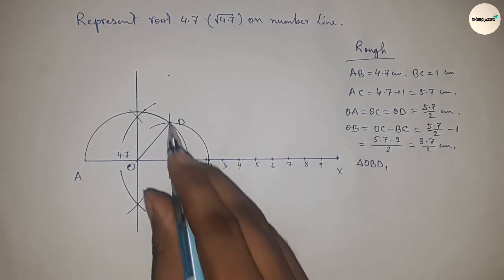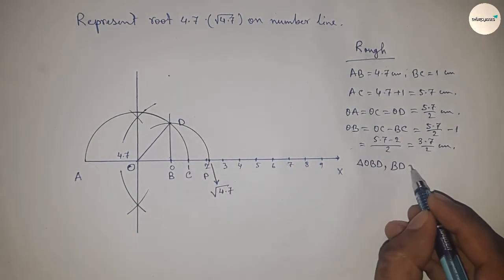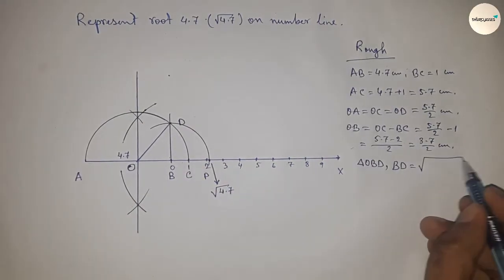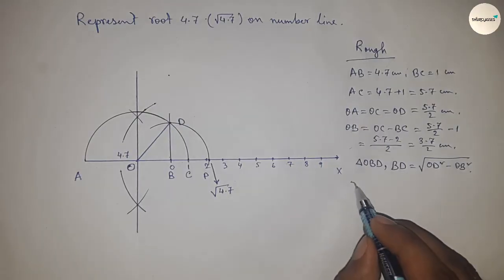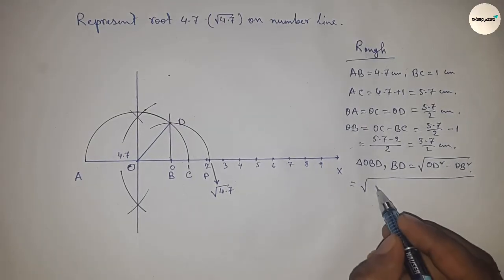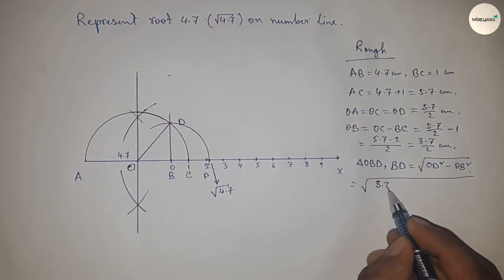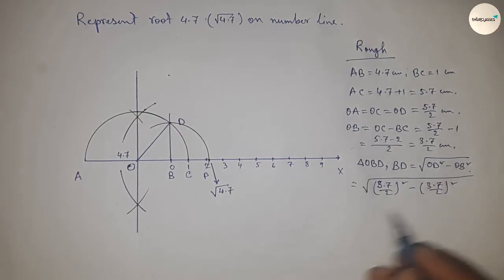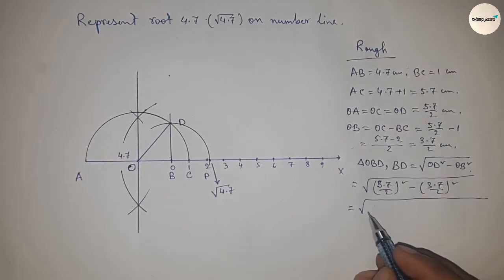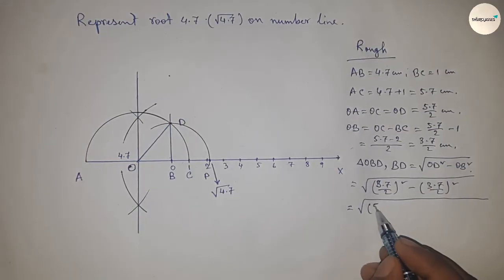From right triangle OBD, BD equals, by Pythagoras theorem, root of OD squared minus OB squared. Putting the values of OD and OB, I'm using the formula a squared minus b squared equals (a plus b) times (a minus b).